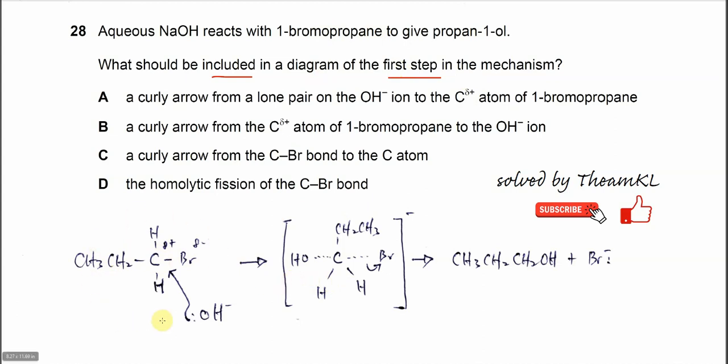This is the first step of the mechanism, where the hydroxide will donate a lone pair to the partial positive carbon to form the intermediate. After that, it will undergo bond breaking and form this propane 1-ol with the bromine.